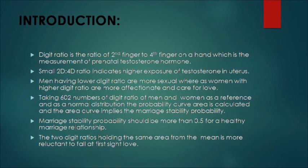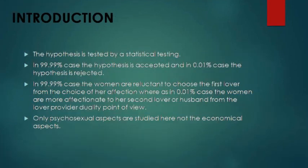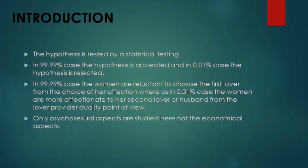The hypothesis is tested by statistical testing. In 99% of cases the hypothesis is accepted, and in 0.01% of cases the hypothesis is rejected. In 99.99% of cases, women are reluctant to choose their first lover from the site of affection, whereas in 0.01% of cases women are more affectionate toward their second lover or husband. From the lover-provider duality point of view, one is the hyposexual aspect — not the economical aspect.